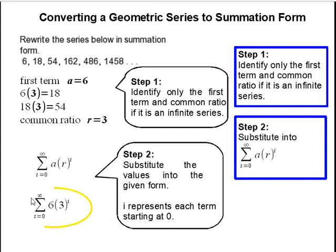And we can do a test just to make sure the first two terms correspond. i to the 0 power is 1, 1 times 6 is 6. Then i is equal to 1, 3 to the 1 is 3, 3 times 6 is 18. So far they correspond and it looks like we are in good shape here. And this completes our problem.